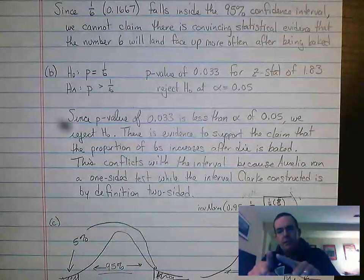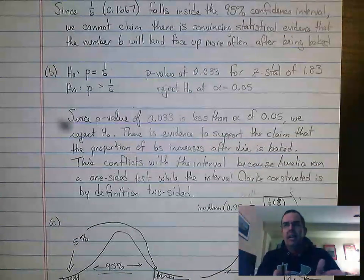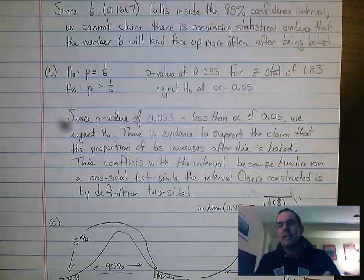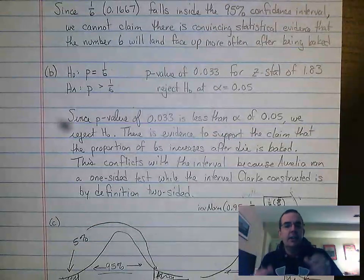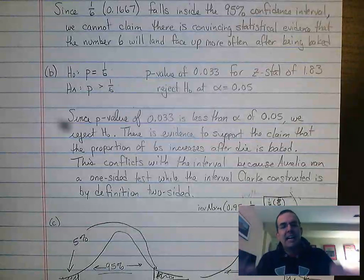When you do a confidence interval, you're doing plus minus, so you're looking both directions. Aurelia's test was only looking up. So in this case, we're comparing a two-sided interval to a one-sided test. And like I said in class, you can't do that and you're most likely not to get the same results.